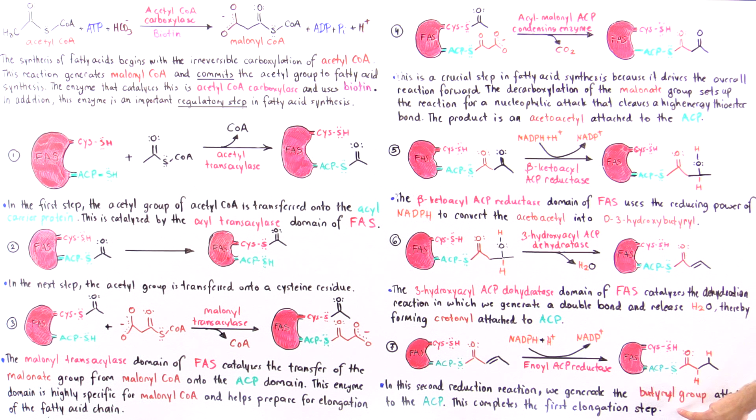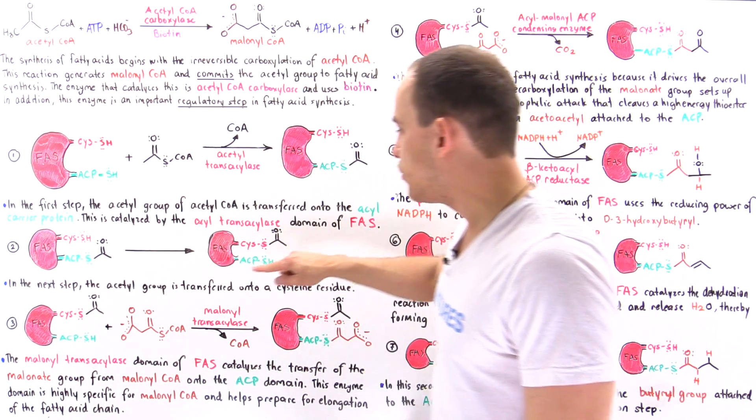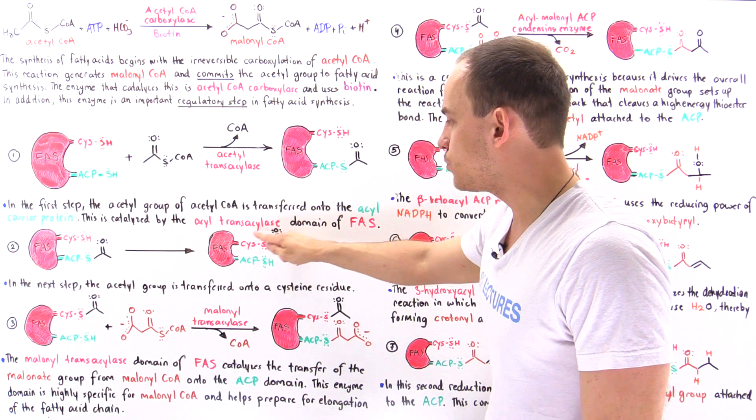So quickly let's talk about how that actually takes place. So in the next step, once we generate this, what will happen is this entire group here, this four-carbon group, will be moved onto this cysteine in the same way that we move this group onto this holding domain molecule shown here.